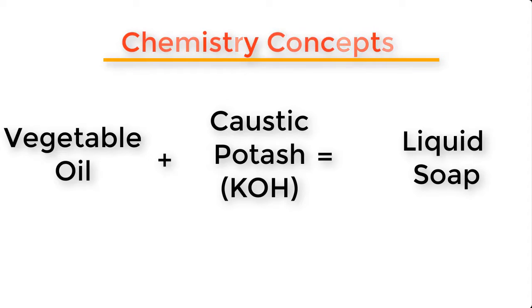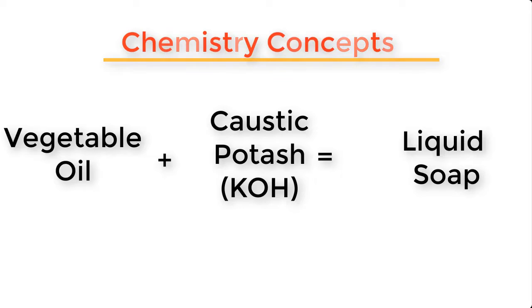This is the basic characteristic behavior of caustic potash and vegetable oil — the reaction between these two chemicals gives rise to liquid soap. Whereas when you combine vegetable oil with caustic soda, that is sodium hydroxide, you will get hard soap. Caustic potash and caustic soda are in the same family of compounds called bases. The lesson learned is that we can produce liquid soap by combining vegetable oil with caustic potash, and solid soap by combining vegetable oil with caustic soda.